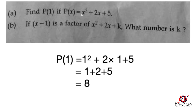So p of x is x squared plus 2x plus 5. For p of 1, x equals 1, so we get 1 squared plus 2 into 1 plus 5, which is 1 plus 2 plus 5, which equals 8. Therefore, p of 1 is equal to 8.